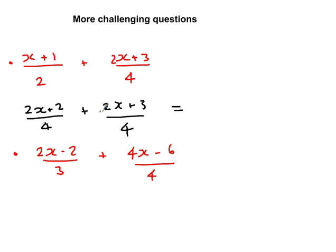So I've now got this as my new first and second fraction. Times by 2, times by 2. And then I can do the same as before. I've got a 2x and a 2x, so that gives me 4x. 2 plus 3 is 5, and that's all over 4.